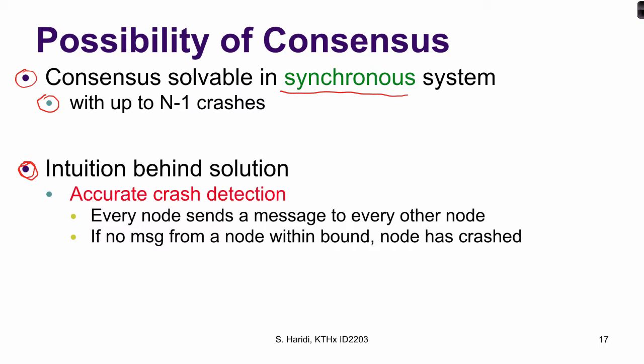The basic intuition behind the solution is that in synchronous systems we can have accurate crash detection. Every node can send a message to every other node, and if no messages are received from a specific node within a certain time bound, that node can be assumed to have crashed. In the course, we will describe an algorithm that, given accurate crash detection, solves the problem of consensus.